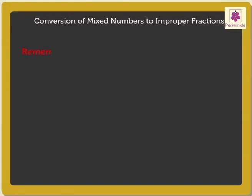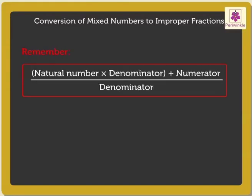Kids, remember the formula for converting a mixed number to an improper fraction: natural number into denominator in brackets plus numerator upon denominator.